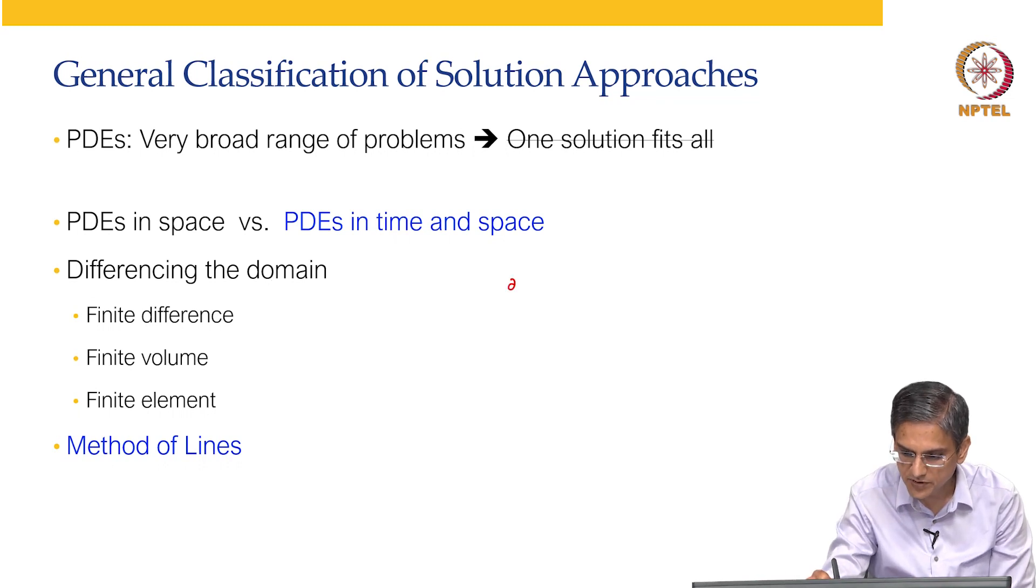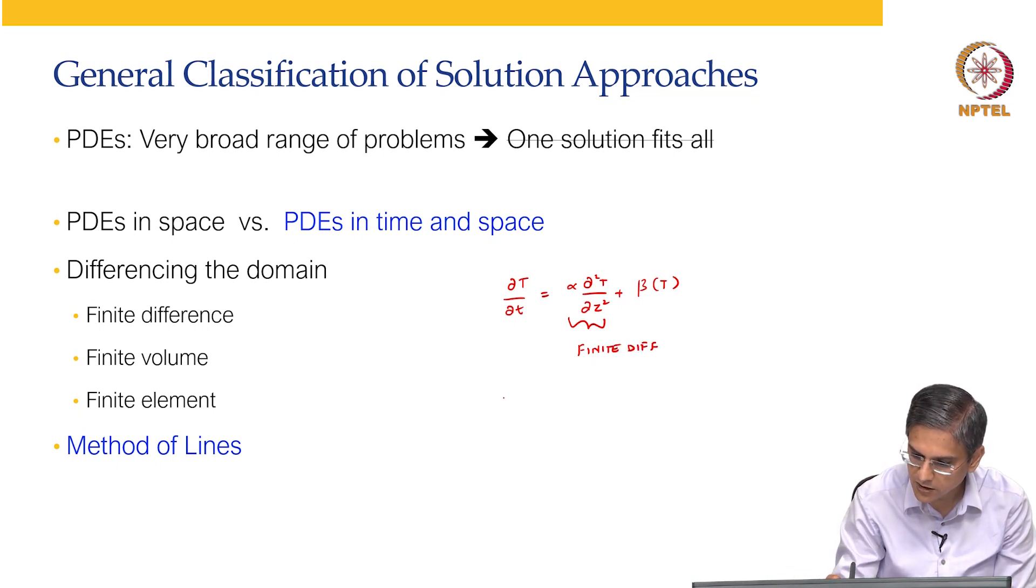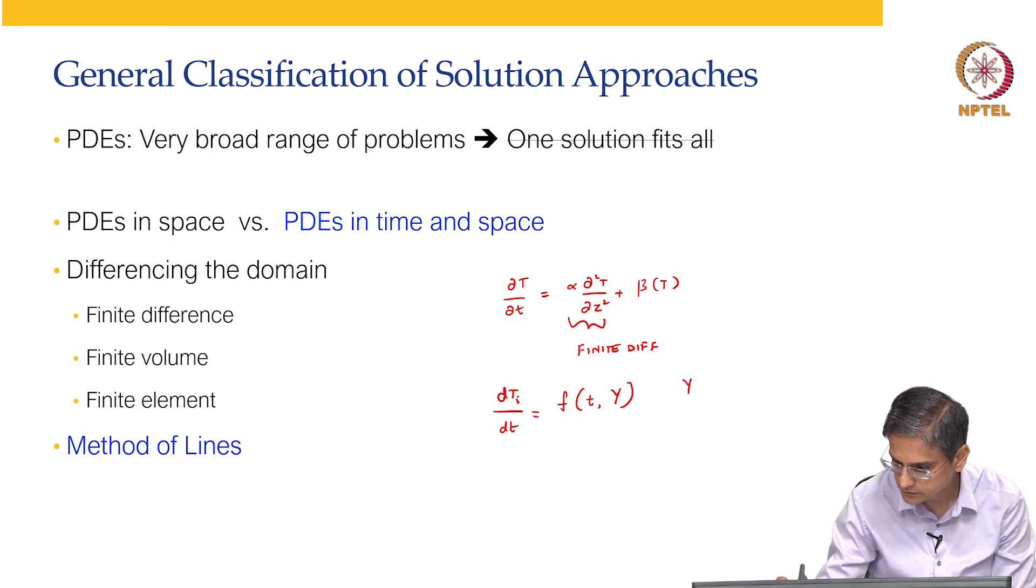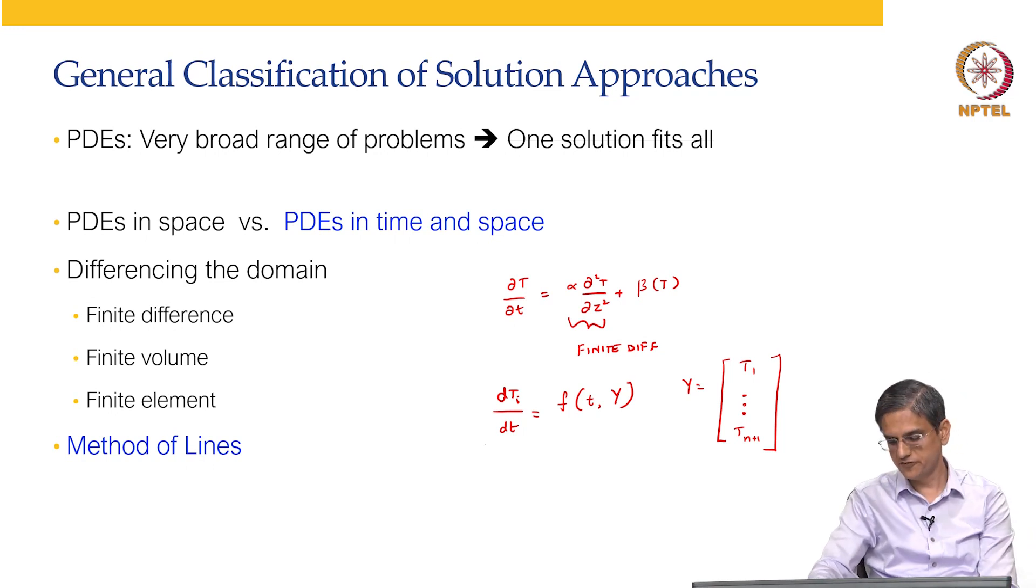For example, if the PDE is dT by dt equal to say alpha d square T by dx square, we use finite difference approach. So, you will get dT_i by dt equal to a finite difference expression, and this you can solve using method of lines. So, this is the other type of approach.